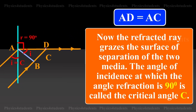Now, the refracted ray grazes the surface of separation of the two media. The angle of incidence at which the angle of refraction is 90 degrees is called the critical angle C.